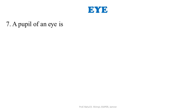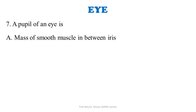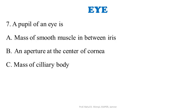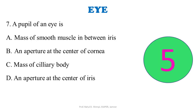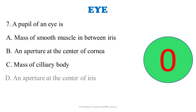A pupil of an eye is: A: a mass of smooth muscle in the iris. B: an aperture at the center of the cornea. C: a mass of ciliary body. D: an aperture at the center of the iris. The correct answer is option D — an aperture at the center of the iris. It is not a mass of smooth muscle, not an aperture at the cornea, and not a mass of the ciliary body.